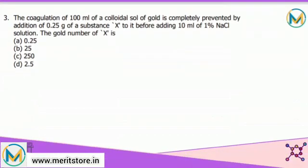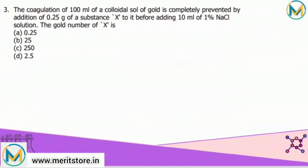Correct. Moving towards the next question. Coagulation of 100 ml of a colloidal sol of gold is completely prevented by addition of 0.25 gram of substance X to it before adding 10 ml of 1% NaCl solution. The gold number of X is: